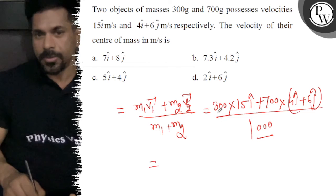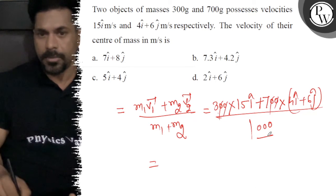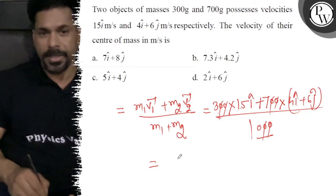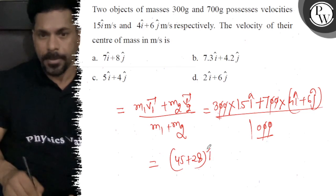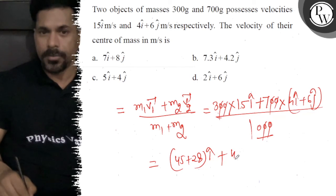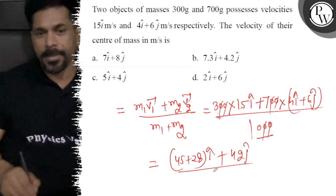Now simplifying this calculation, we get 45î plus 28î plus 42ĵ, divided by 10.